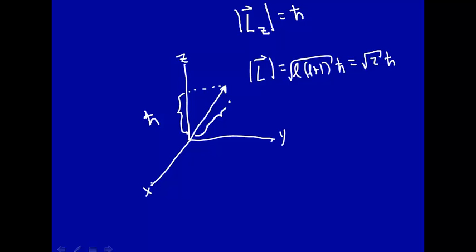This length here has to be the square root of 2 h-bar. So this means that this is a 1-1-square root of 2 triangle. This has to be equal to h-bar. And for a 1-1-square root of 2 triangle, this angle is 45 degrees.